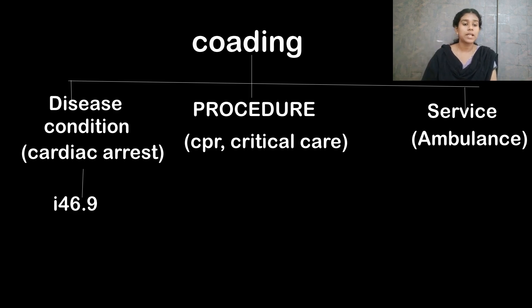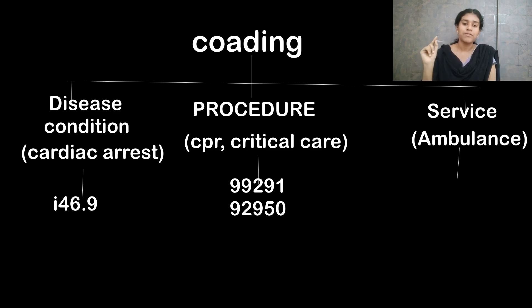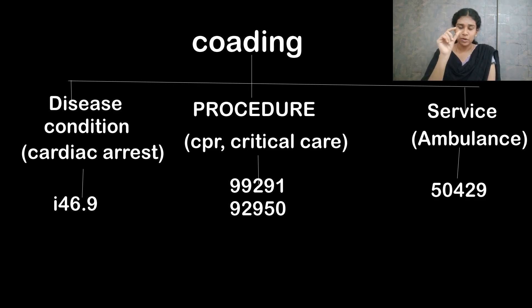What is the procedure? CPR and critical care. CPR code is 99291; critical care is 92950. Ambulance service code is 50429. This is the code — this is the chart, the medical code. If we are referring to the code, we refer to the books.